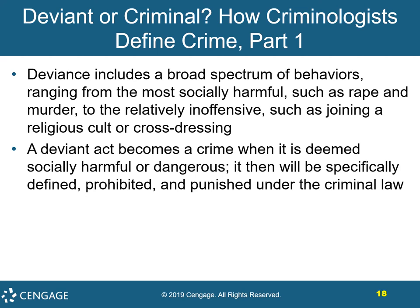Now let's talk about deviant versus criminal — how criminologists define crime. Deviance includes a broad spectrum of behaviors ranging from the most socially harmful, such as rape and murder, to the relatively inoffensive, such as joining a religious cult or cross-dressing. A deviant act becomes a crime, however, when it is deemed socially harmful or dangerous, and is then specifically defined, prohibited, and punished under criminal law.